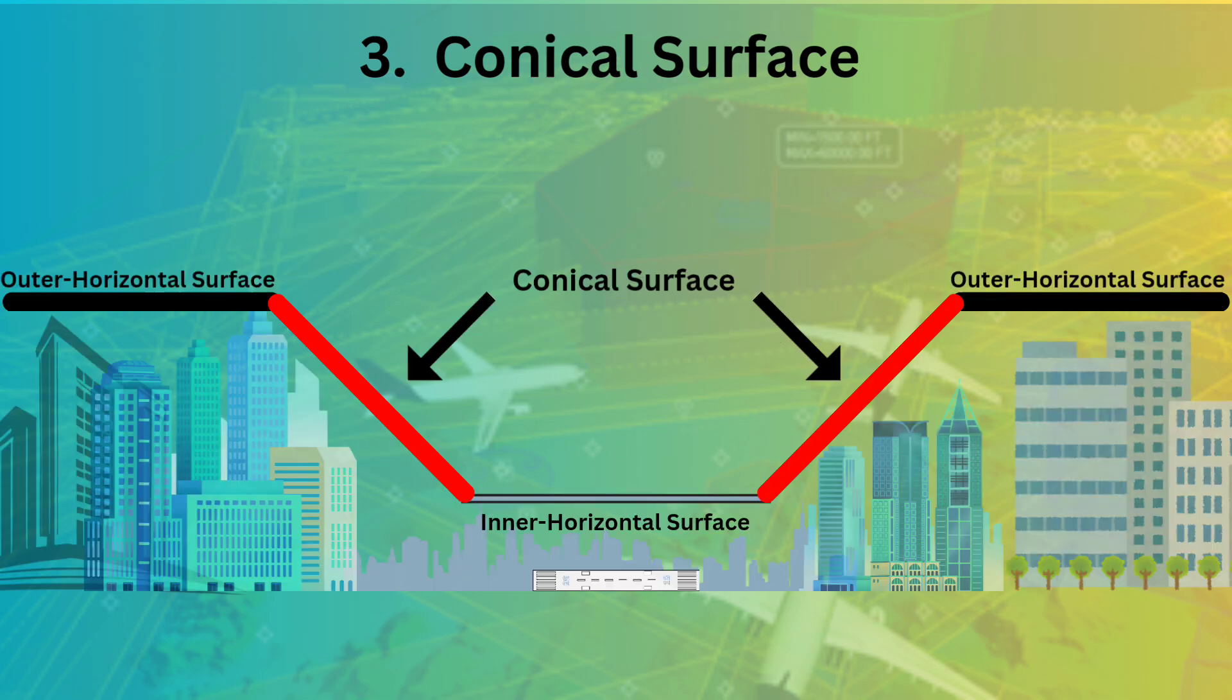This could better be understood with this picture where inner and outer horizontal surfaces are marked and the red line connecting both of these surfaces depicts conical surface. This means that inner horizontal surface is joined with the outer horizontal surface through conical surface and this is having a slope of 5%.